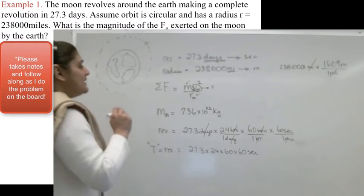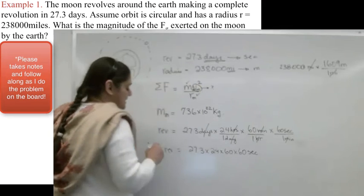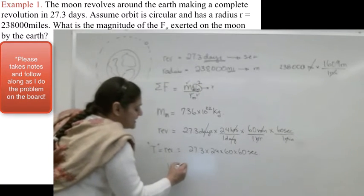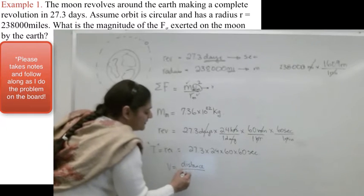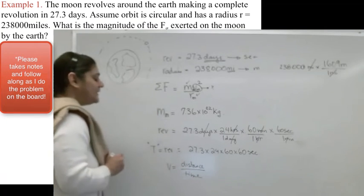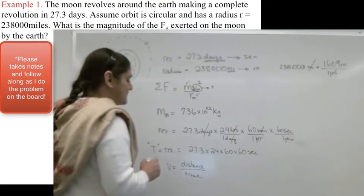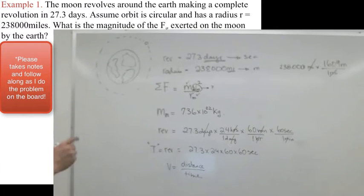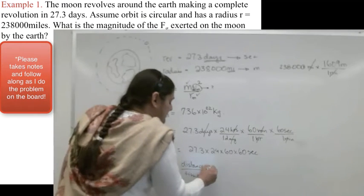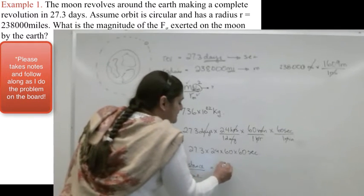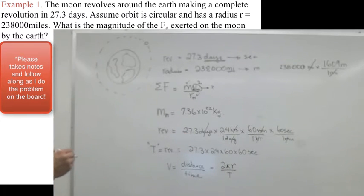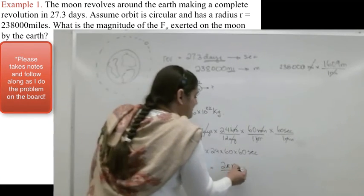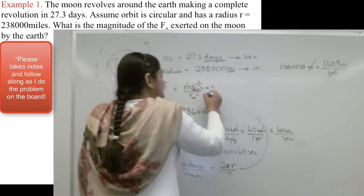I do know something. I know that this velocity is given by distance over time. So speed is given by distance over time. That actually is going to be really useful, because this is going to be 2πr over T. Excellent. Now I can plug this value in here.